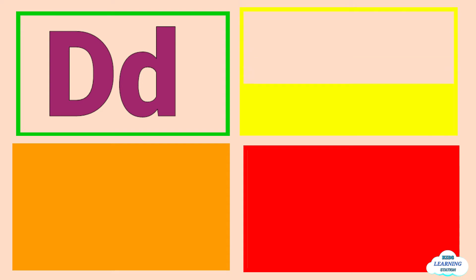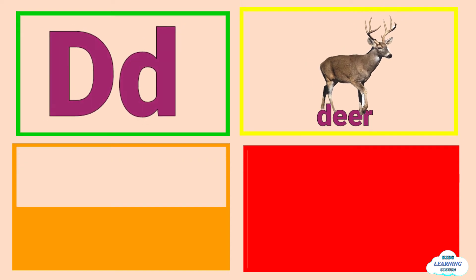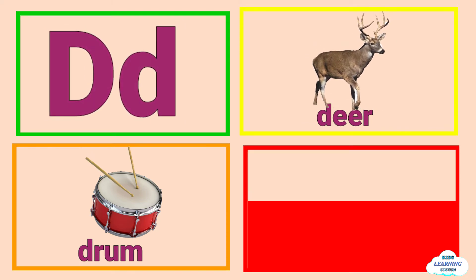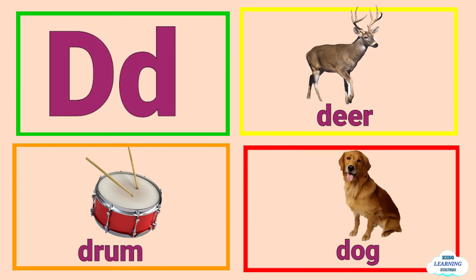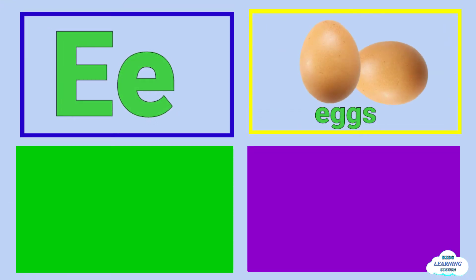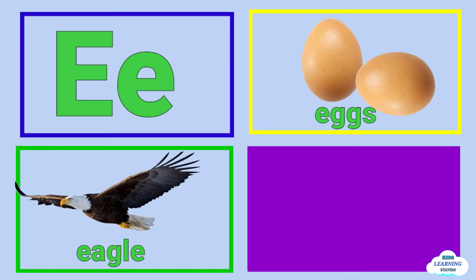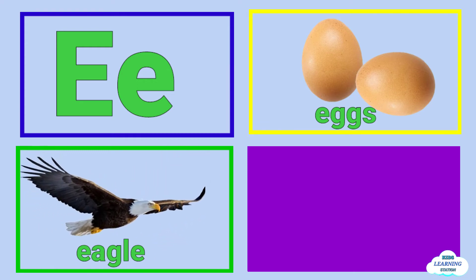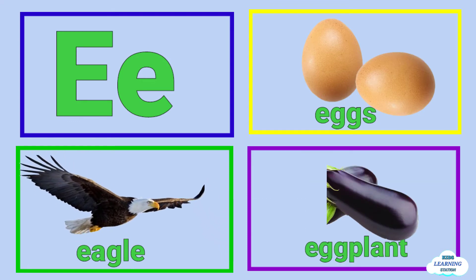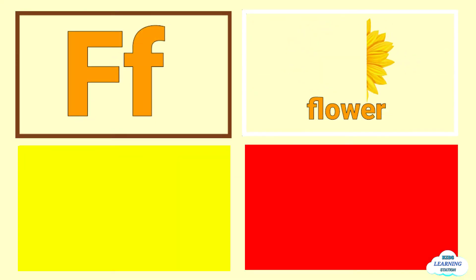D is for deer, deer. D is for drum, drum. D is for dog, dog. E is for eggs, eggs. E is for eagle, eagle. E is for eggplant, eggplant.